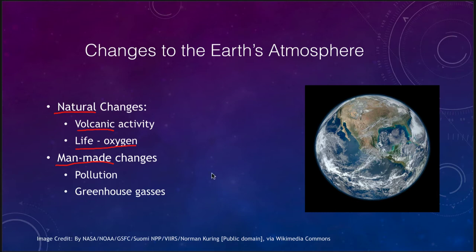Both of these can cause some changes to the climate. Volcanic activity can put dust into the atmosphere. So massive eruptions — if you hear about things like a super volcano — a very massive eruption can actually increase the dust content of the atmosphere, blocking out sunlight and cooling off the earth.